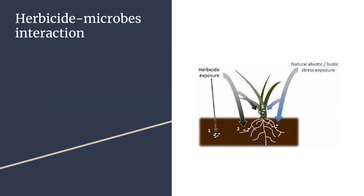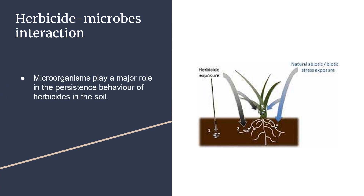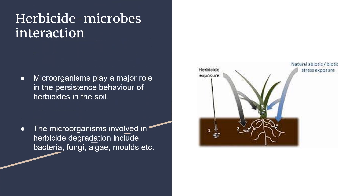Herbicide-Microbes Interaction: Microorganisms play a major role in the persistent behavior of herbicides in the soil. The microorganisms involved in herbicide degradation include bacteria, fungi, algae, molds, and others.